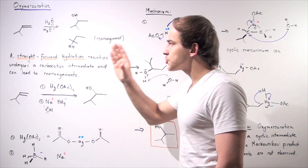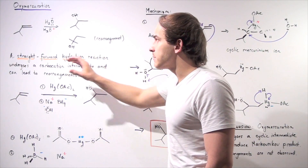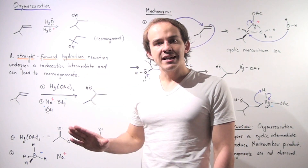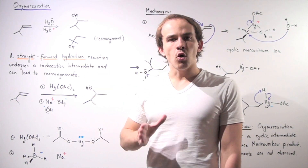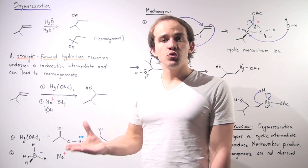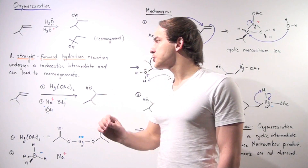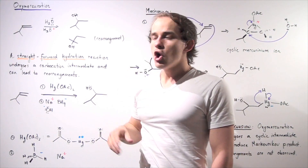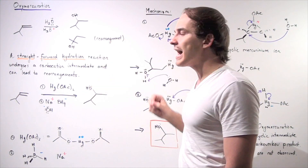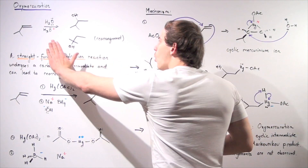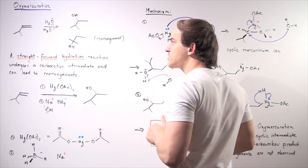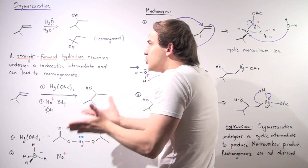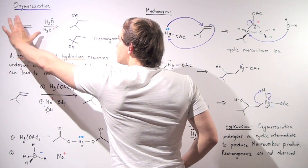Recall that in a straightforward or direct hydration reaction, this type of reaction proceeds via a carbocation intermediate. That carbocation intermediate can undergo an alkyl or hydride shift if that shift produces a more stable carbocation intermediate. So in the following hydration reaction, we can either form the Markovnikov product or we can form a rearranged alcohol. Suppose we don't want to form the rearranged product and only want to form the Markovnikov product — what can we do?